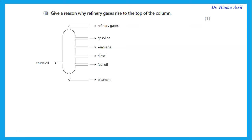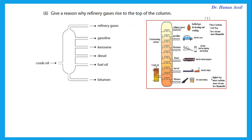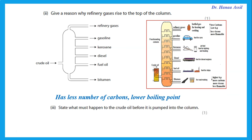Give a reason why refinery gases rise to the top of the column. The one that goes to the top has a lower boiling point. The one with lower boiling point is collected at the top. What must happen to the crude oil before it is pumped into the column? It is heated and vaporized, then it goes into the fractionating column and is cooled and condensed at different boiling points.